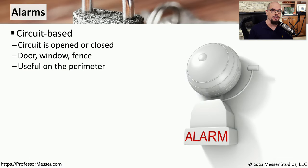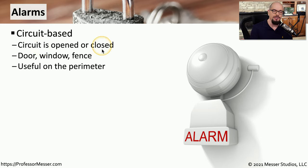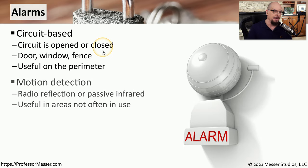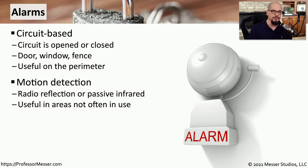Another type of physical security device is an alarm system. If you have an alarm system on a door or window, the alarm goes off if that door or window happens to open. That's usually based on a circuit — there's usually a sensor connected to the door or window, and if that door or window moves, the circuit is broken and the alarm goes off. There is also motion detection available with certain alarms that will look for reflections or some type of infrared motion and be able to alarm if it detects either of those.